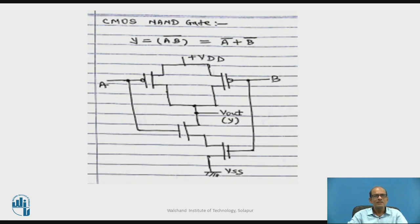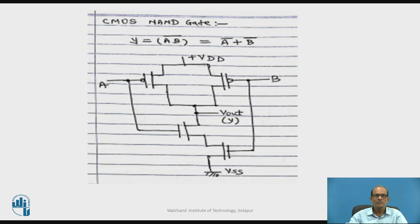Using CMOS logic, we can implement various gates. Let us take the example of a two-input NAND gate. The NAND gate is given by Y equal to AB bar. By De Morgan's theorem, AB bar is equal to A bar plus B bar. This is the circuit diagram for the two-input NAND gate.